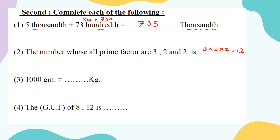1000 grams equals how many kilograms? Going from a small unit to a big unit, divide by 1000 — or multiply by 0.001, moving the decimal point three places. The answer is 1 kilogram. We all know 1000 grams equals one kilogram.